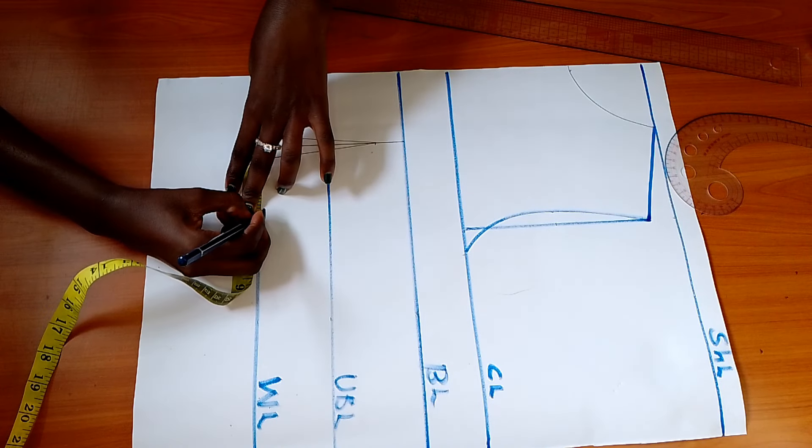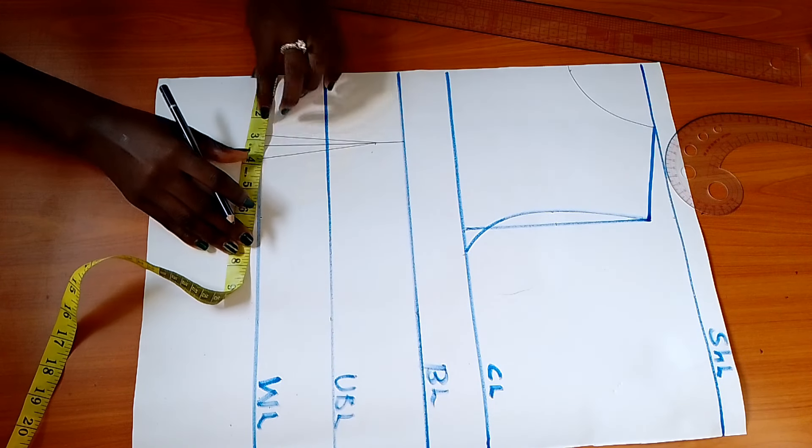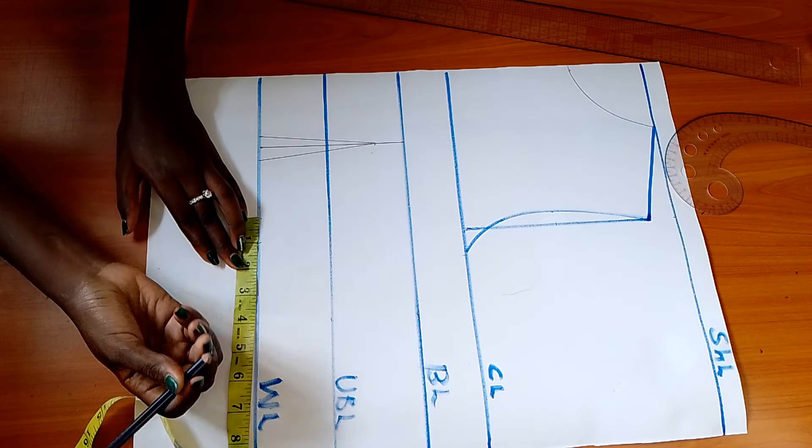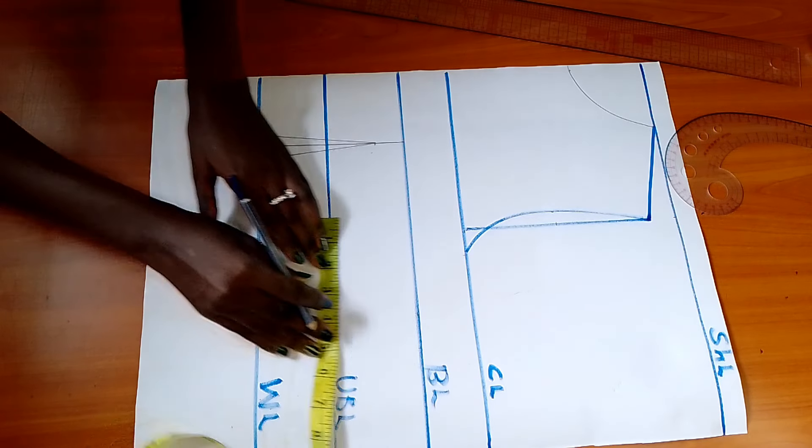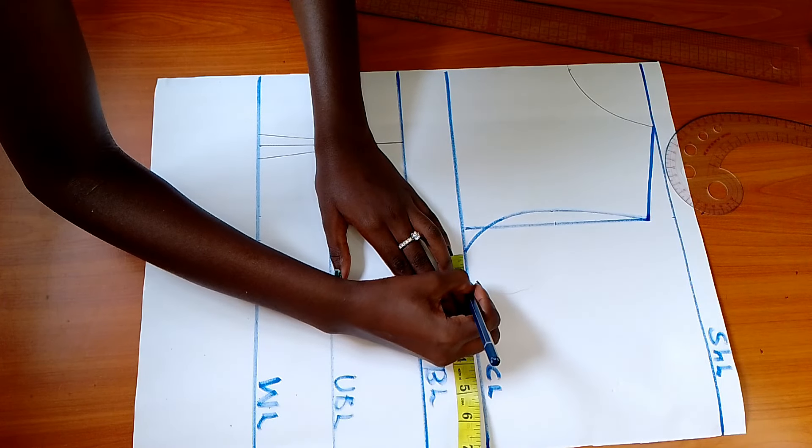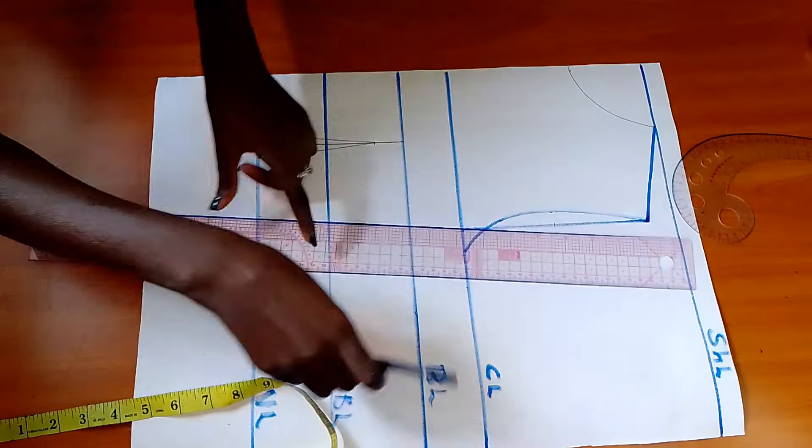Now we'll focus on taking quarter waist circumference on waist line from center front plus one inch dart replacement plus another one and a quarter inches stitching allowance. Since we already marked quarter bust circumference on chest length earlier, add same stitching allowance and draw bodice side outline like that.